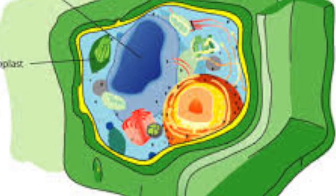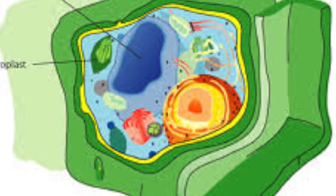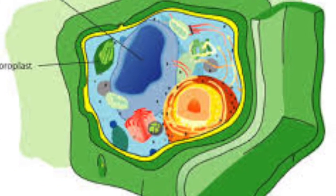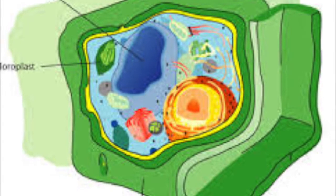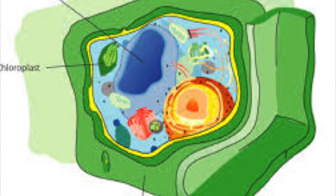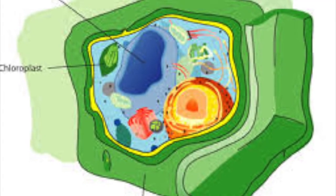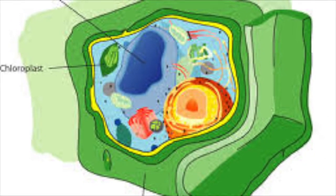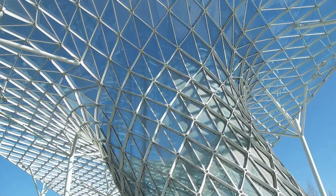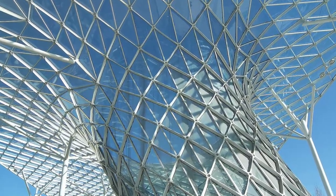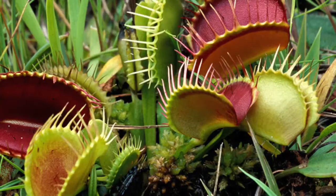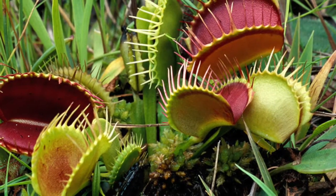Cell wall. The cell wall is a hard layer of polysaccharides outside the cell membrane that makes the cell rigid. The cell wall gives the cell structure and support, and the cell wall is only found in plant cells.